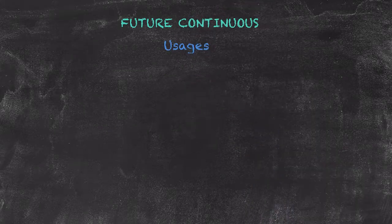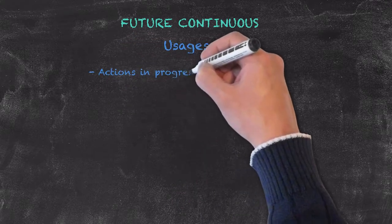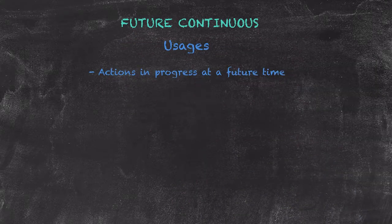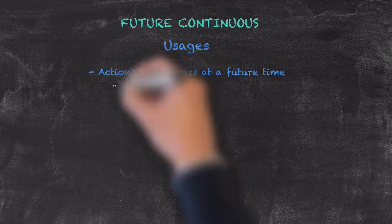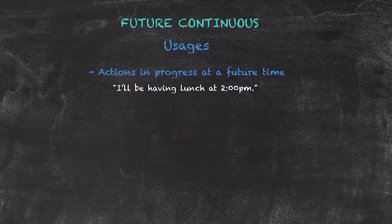Some of the more common usages for the future continuous tense are as follows. We can use it to speak about actions in progress at a future time, such as: I'll be having lunch at 2 p.m.